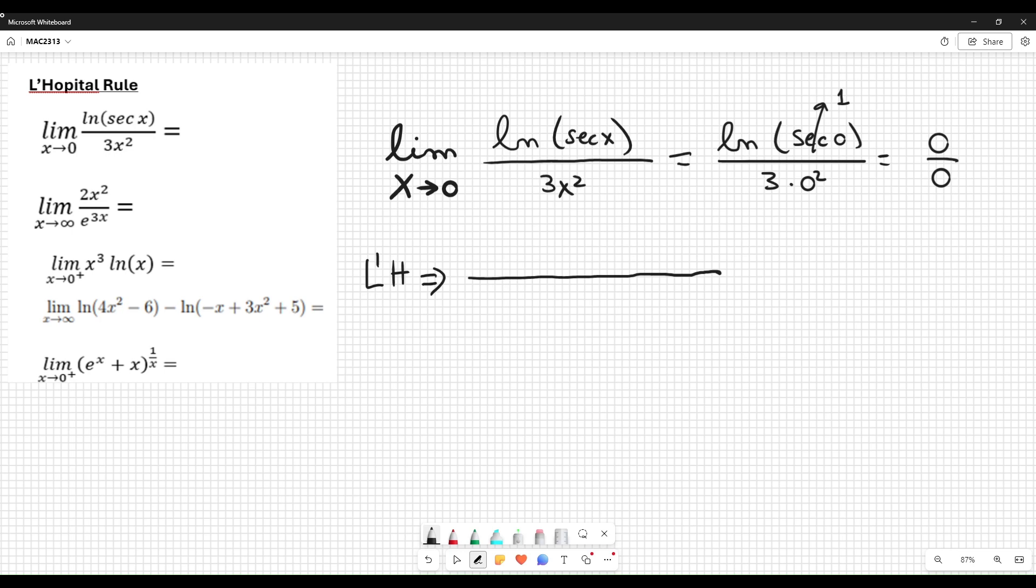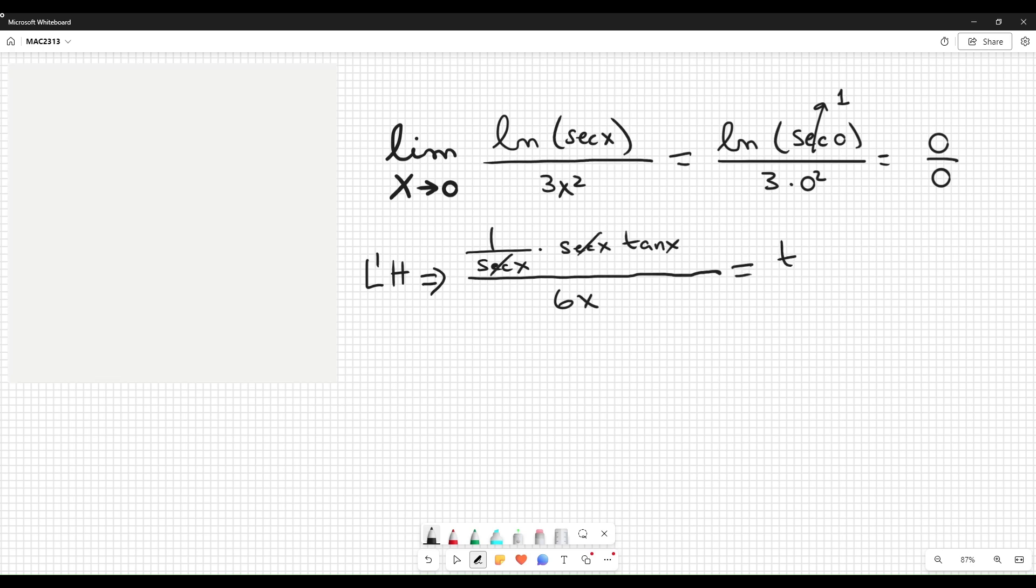So derivative of logarithm is the reciprocal of the argument, which is secant. Times derivative of secant, which is secant tangent. Divided by 6x. Okay, secant is cancelled. And we have tangent x divided by 6x.